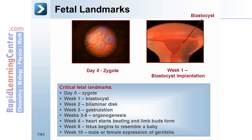In week four, the heart starts beating and limb buds form. In week eight, the fetus begins to resemble a baby and fetal movement is present. And in week ten, male or female expression of genitalia is evident.